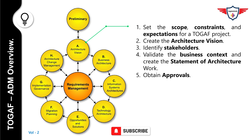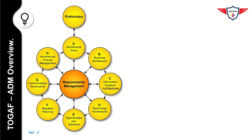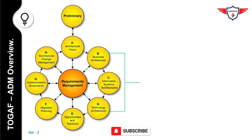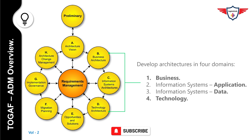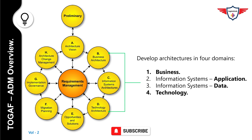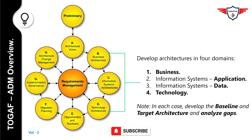Now let's talk about Phase B — Business Architecture, Phase C — Information Systems Architectures, and Phase D — Technology Architecture together, because they have similar activities. In these three phases, you will develop architectures in four domains: business, application, data, and technology. In each case, you develop the baseline and target architecture and analyze gaps.